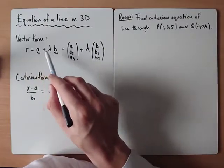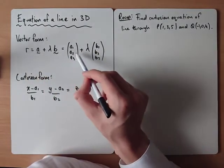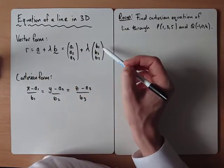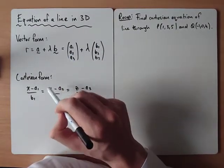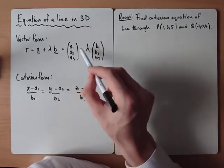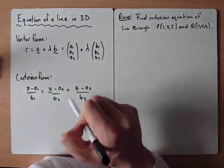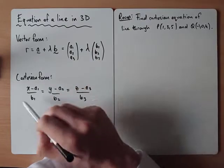Don't forget the vector form. This represents the point on the line and this is the direction of the line. When it's in Cartesian form, if you want to go from vector form to Cartesian form, rearrange each of these to make lambda the subject and then you could equate them all to themselves.